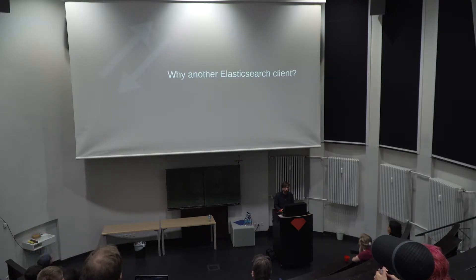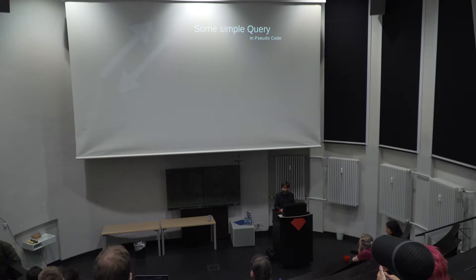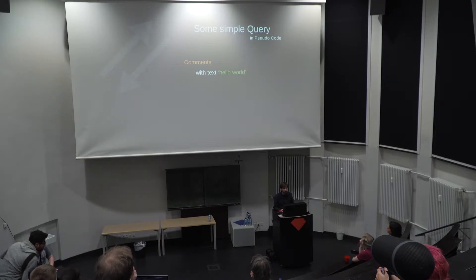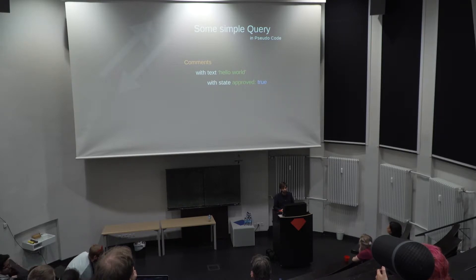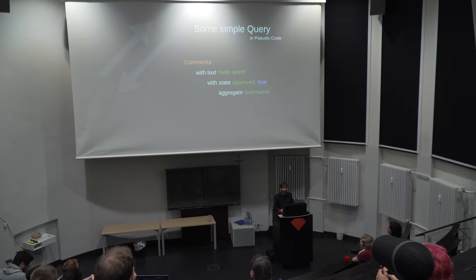Why actually another new Elasticsearch client while there are already some good clients out there? Let's take a step back and see what a simple query looks like in pseudocode. For example, we have some comments in our database we want to search through, and they should contain the text 'hello world'. They should have a state of 'approved' — we have a review process for these comments and only want to show the approved ones. We want to aggregate over username to show some counts regarding which users had how many comments.